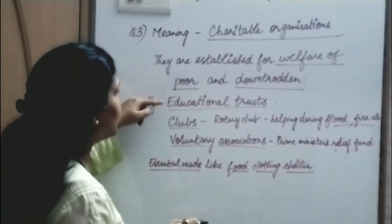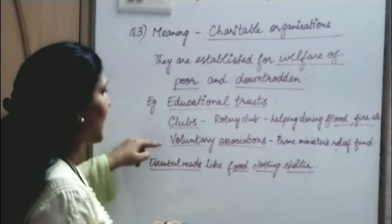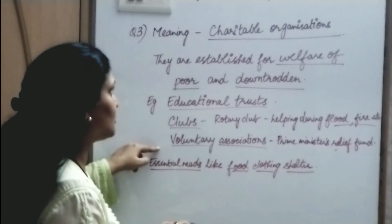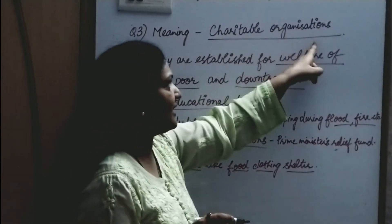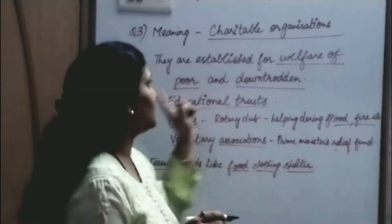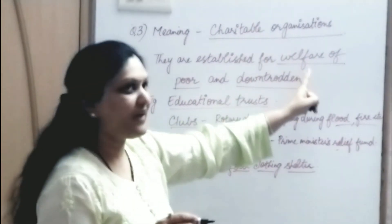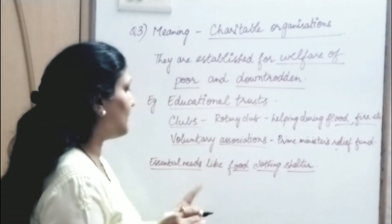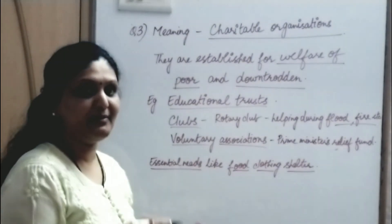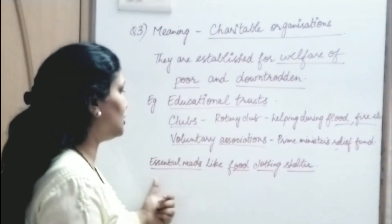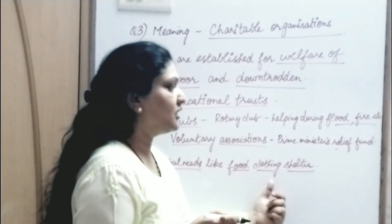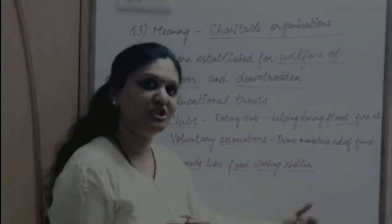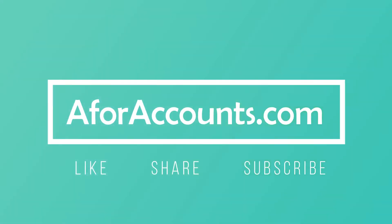So, examples are Educational Trust, Clubs, and Voluntary Associations. Charitable Organizations are established for the welfare of poor and downtrodden people — those who can't even meet their essential needs like Food, Clothing, and Shelter.